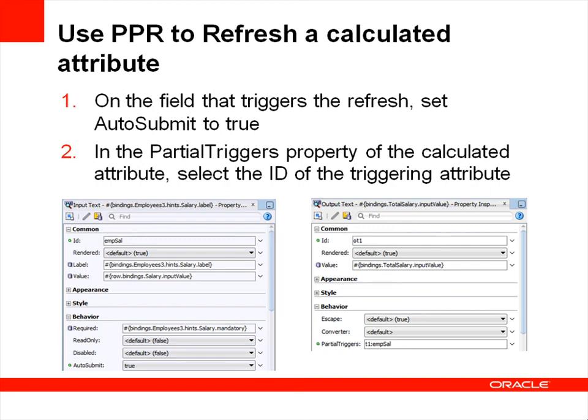You can refresh the value of calculated attributes very easily in ADF by using Partial Page Rendering, also known as PPR. PPR enables ADF Faces components to re-render areas of the page without re-rendering the entire page. On the field or control that triggers a refresh — in this case, Salary — set the Auto Submit property to True and specify a meaningful ID. Then, in the Partial Triggers property of the calculated attribute, in this case Total Salary, select the ID of the attribute that will trigger the calculation. Select M-Sal.